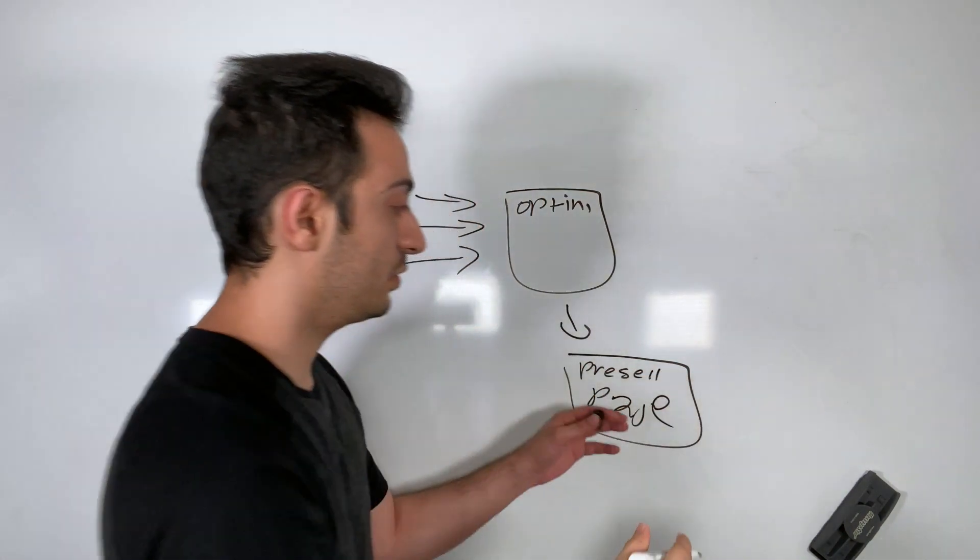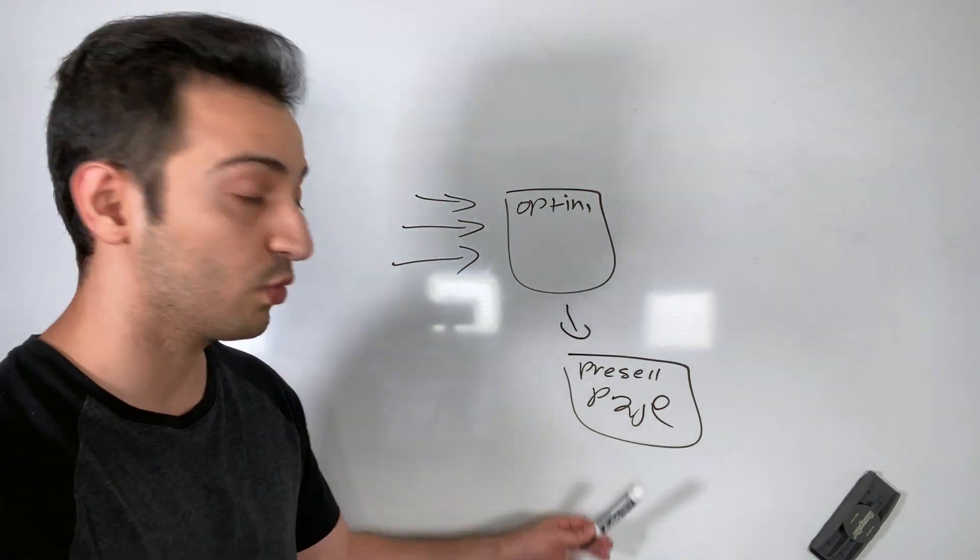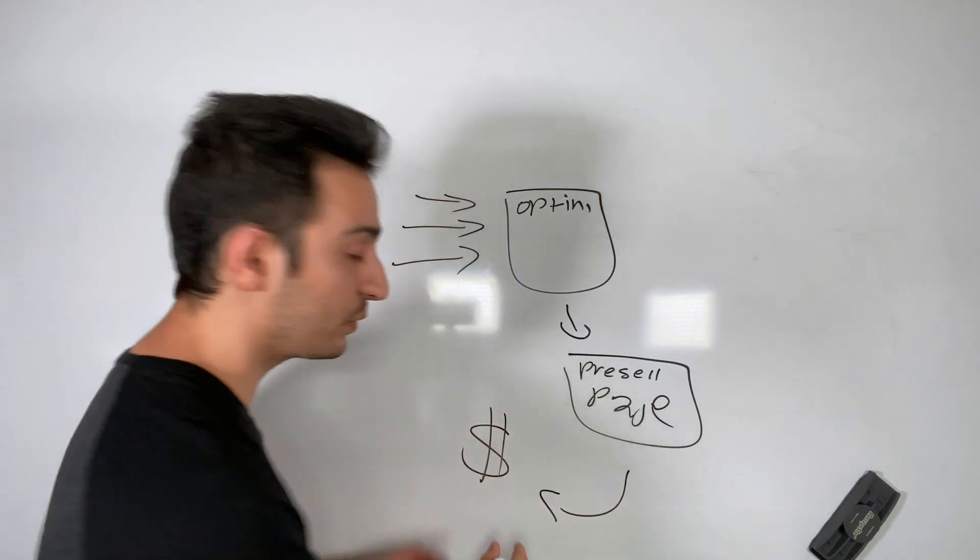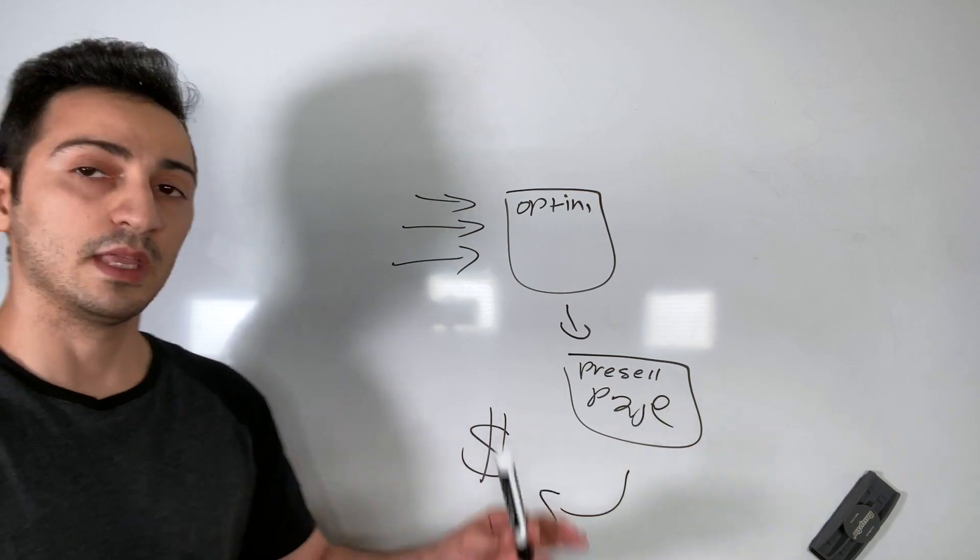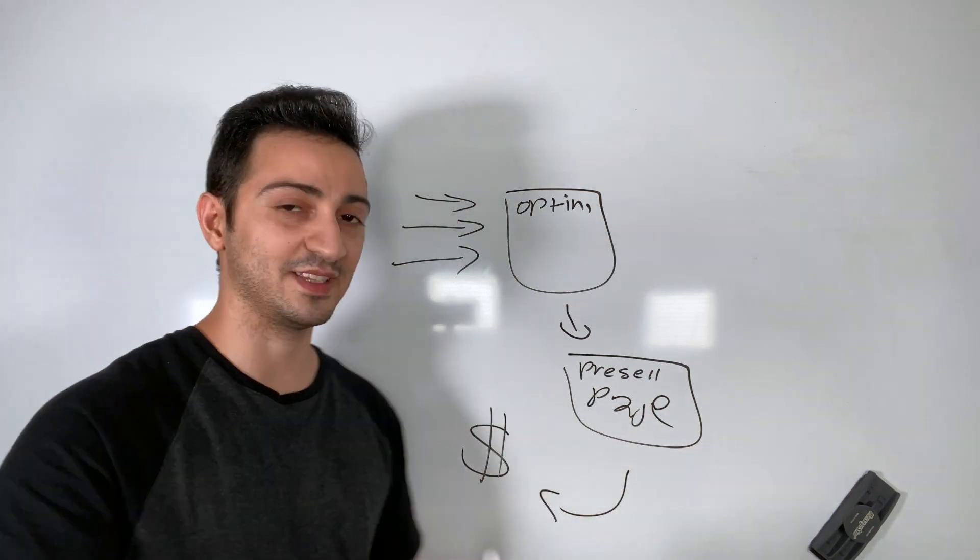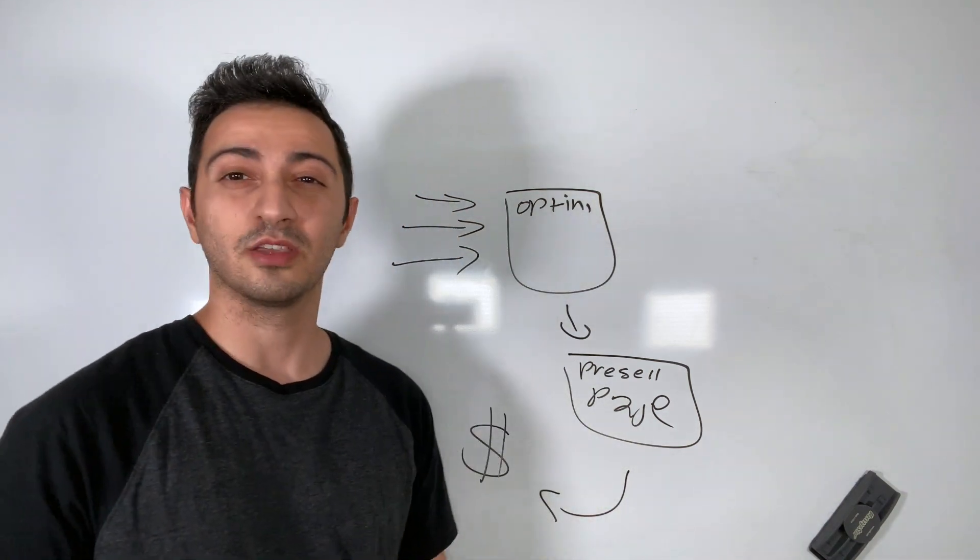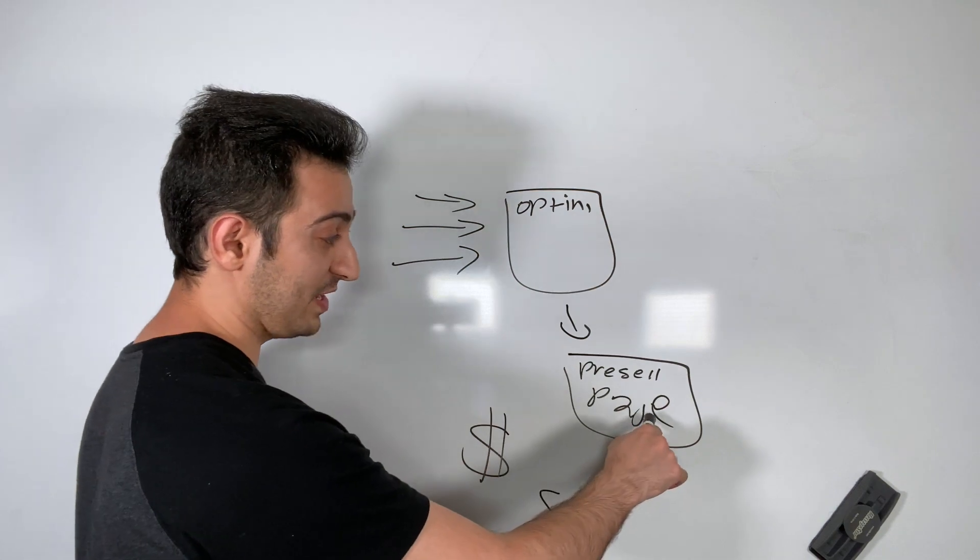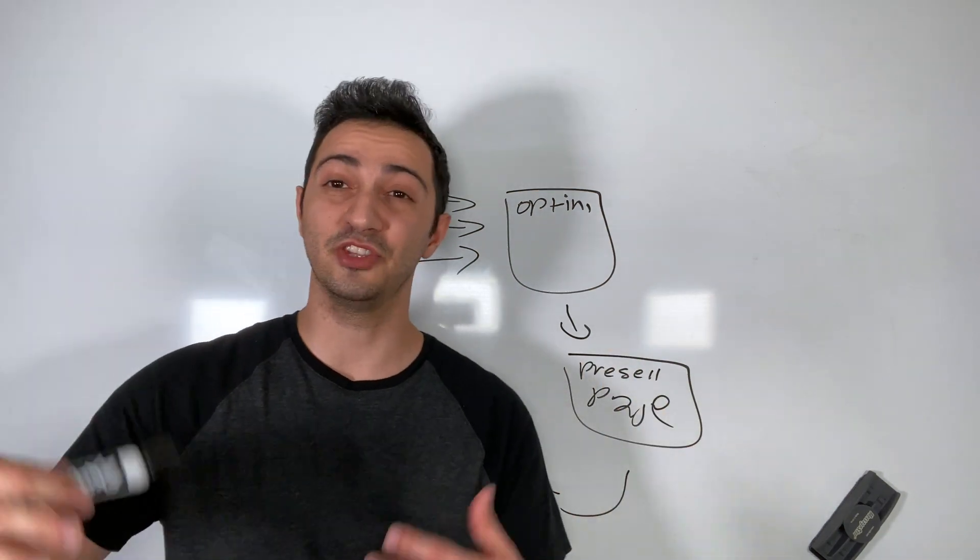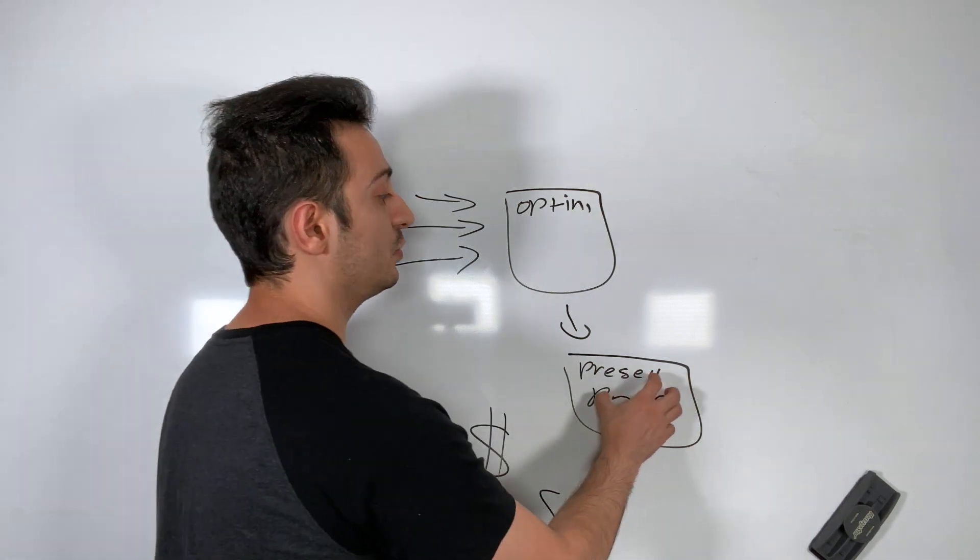And then from the opt-in page, I send the people to a pre-sale page. So here, what I do is I get them ready for the next page. Because the next page is going to be my affiliate link. Now, the problem with this affiliate link is that this is a webinar. So a webinar has a sign-up page. So generally, you don't want people to come into this page that they just signed up and go to a next page that has another opt-in page where they have to put their name and information. So what you want to do is you want to warm them up.